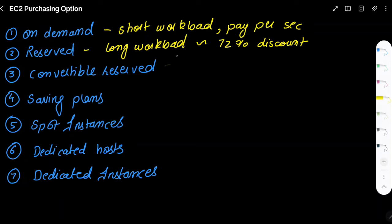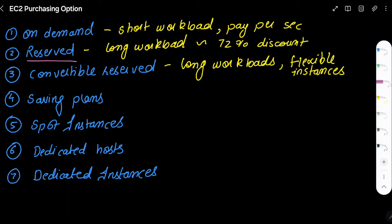About convertible reserved instances—again suitable for long workloads but with flexible instances. When you go for reserved options, you cannot change the instance type or configurations. But with convertible reserved, you get lower discounts but you get the leverage where you can play around with your configurations and change the instance types. That's one benefit.